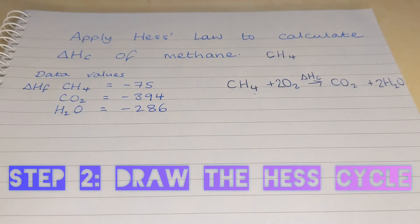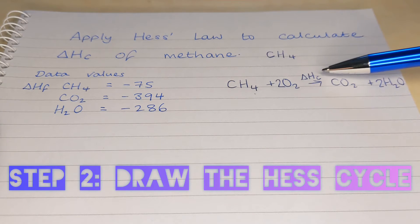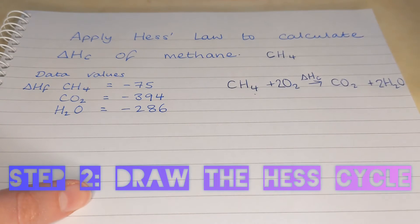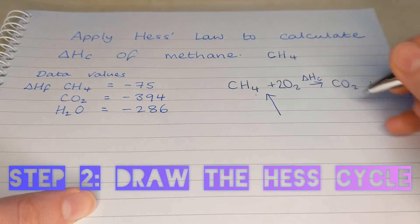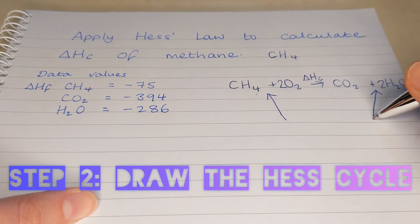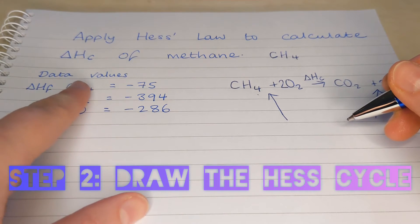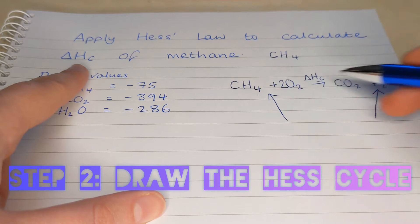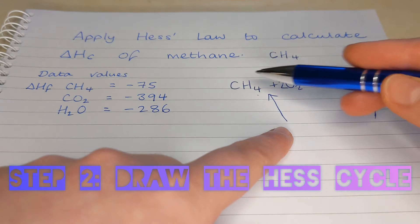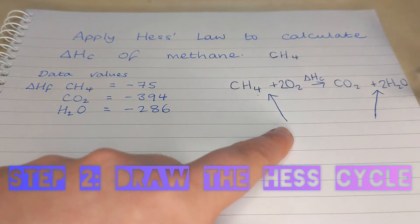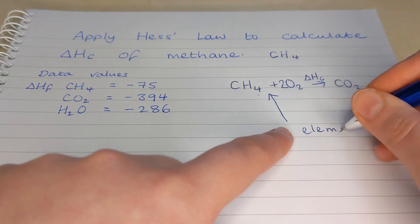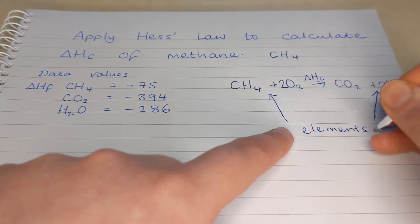Now we need to draw a Hess cycle. When we want to calculate combustion, we actually have to use formation data. So the Hess cycle we want is going to look like this. And we have elements at the bottom because we're using formation values to calculate an energy change of combustion. Now we could just write the elements that are involved. So carbon, hydrogen and oxygen, but we don't actually need to. It doesn't make a difference to our answer. So I'm just going to write the word elements.